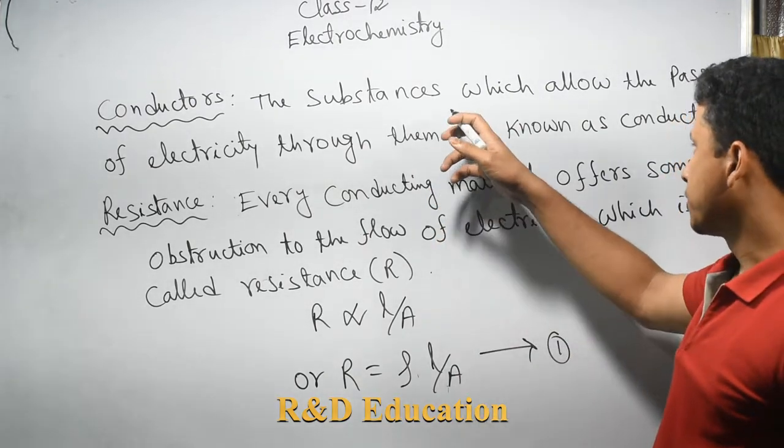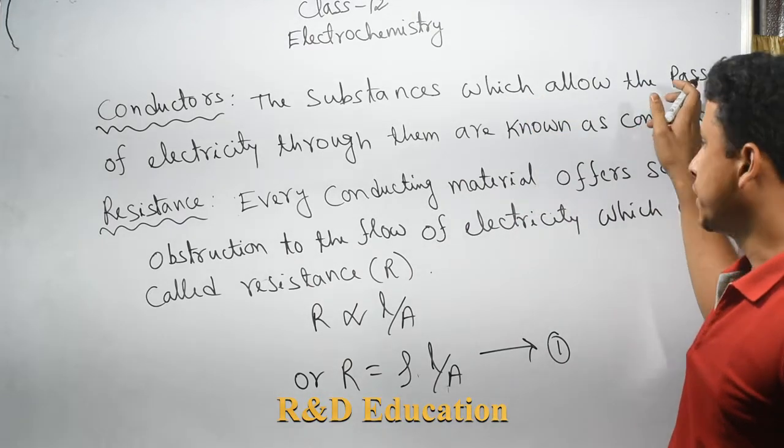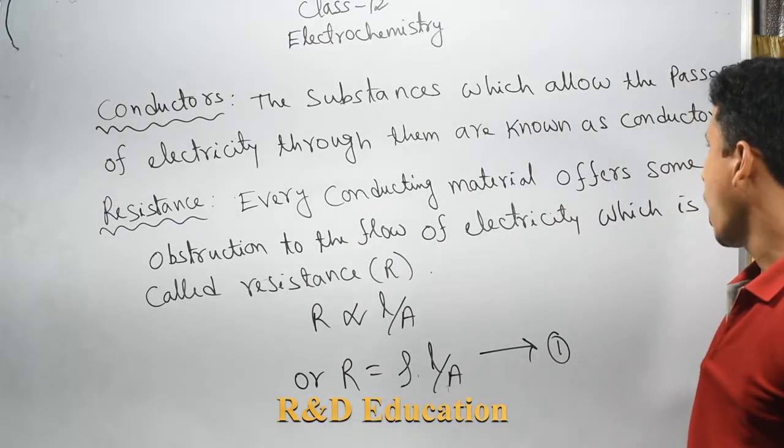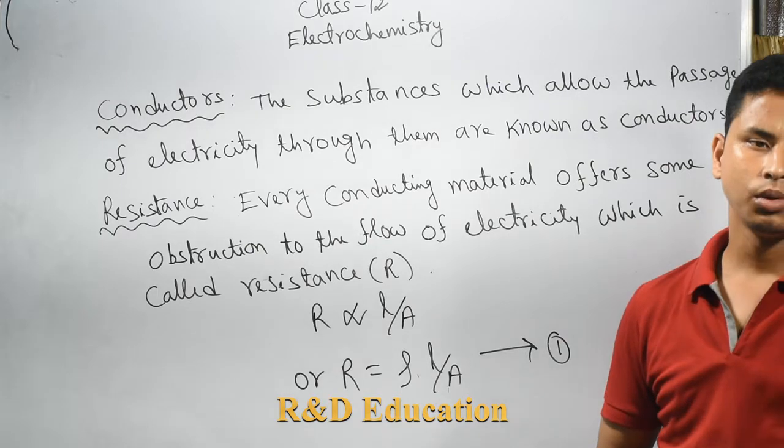The substances which allow the passage of electricity through them are known as conductors.